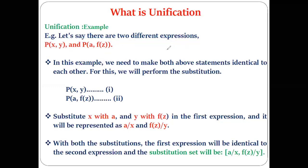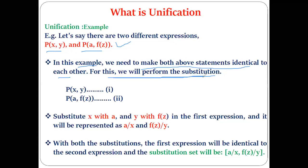Third rule says: similar variables must not be present across the expressions. Here the variables are different — so the third condition is also satisfied. It means we can make these expressions unique. Now we need to make both atomic expressions identical to each other using substitution.